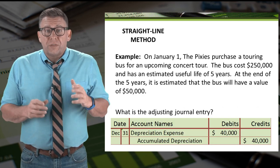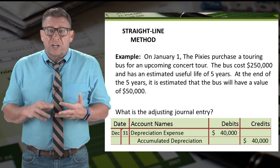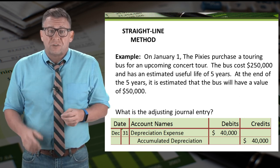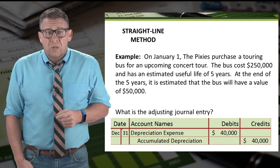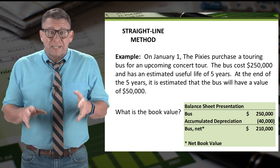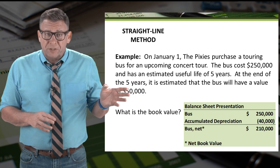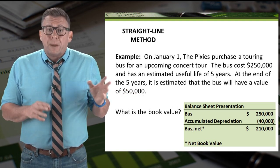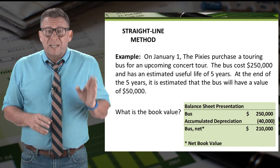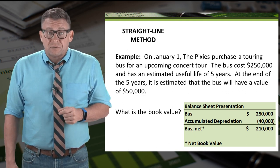We can record the adjusting journal entry by debiting depreciation expense and crediting accumulated depreciation for $40,000. The book value is the cost of the asset minus its accumulated depreciation, so cost of $250,000 minus accumulated depreciation of $40,000 gives us a net book value of $210,000.